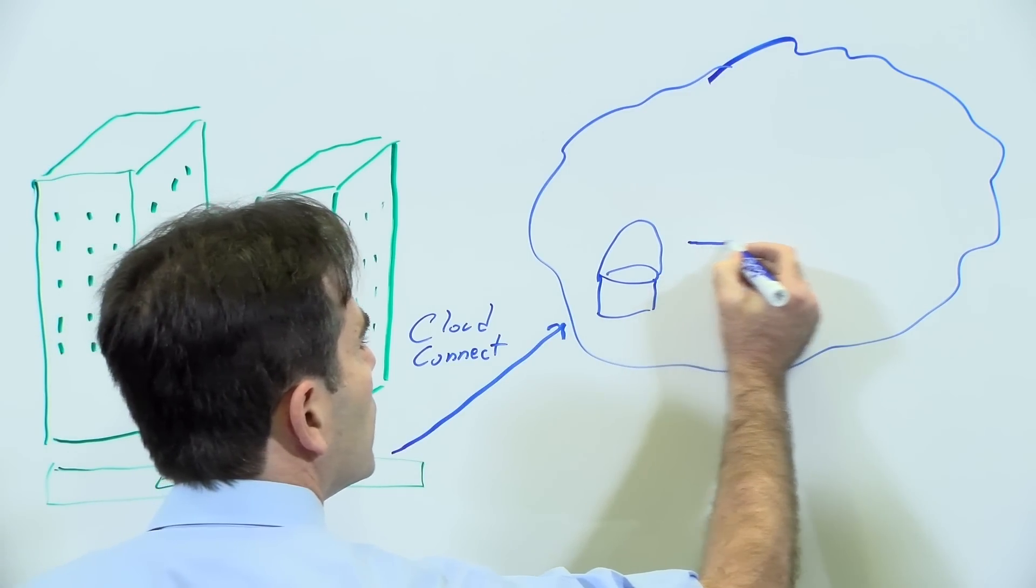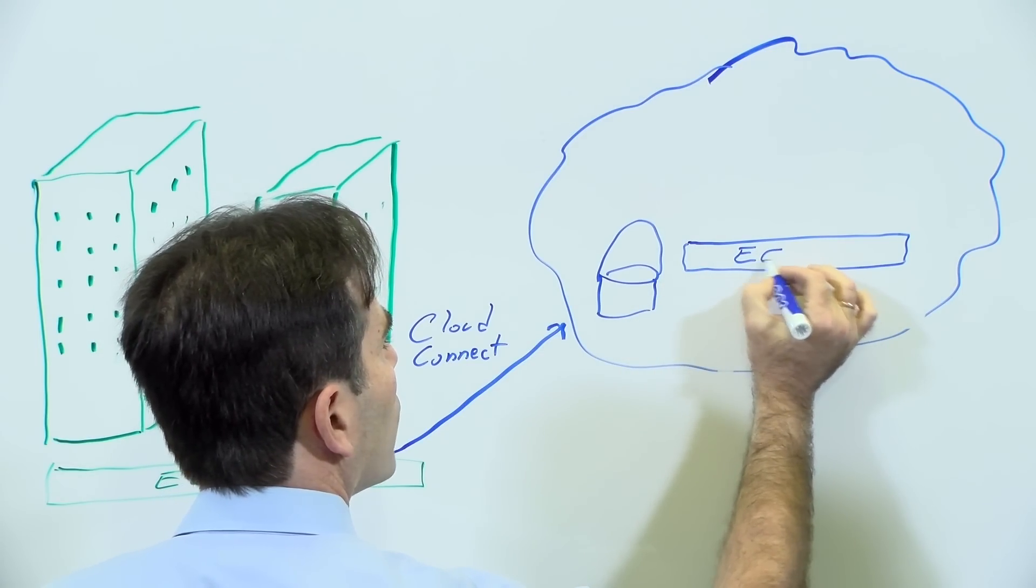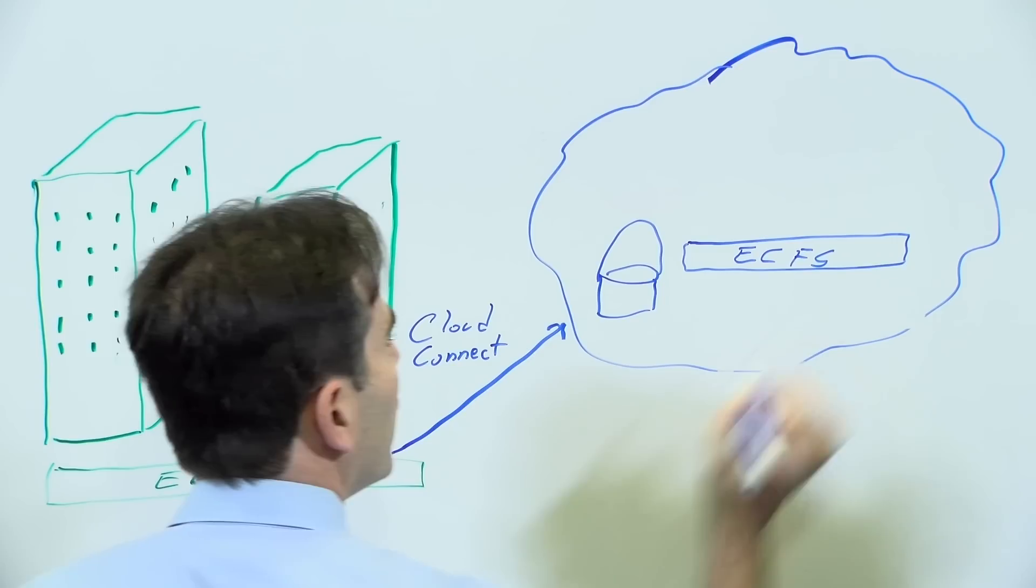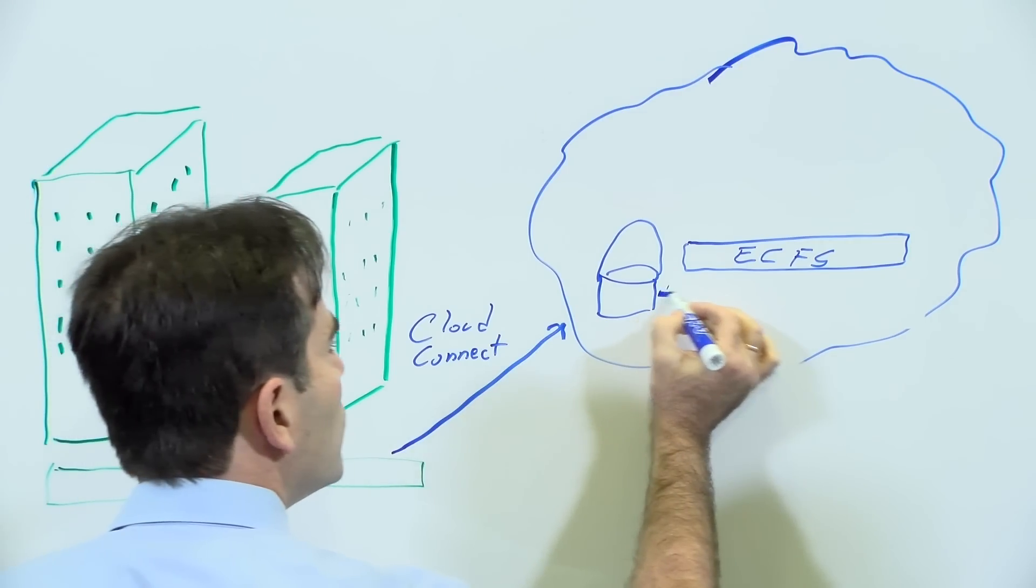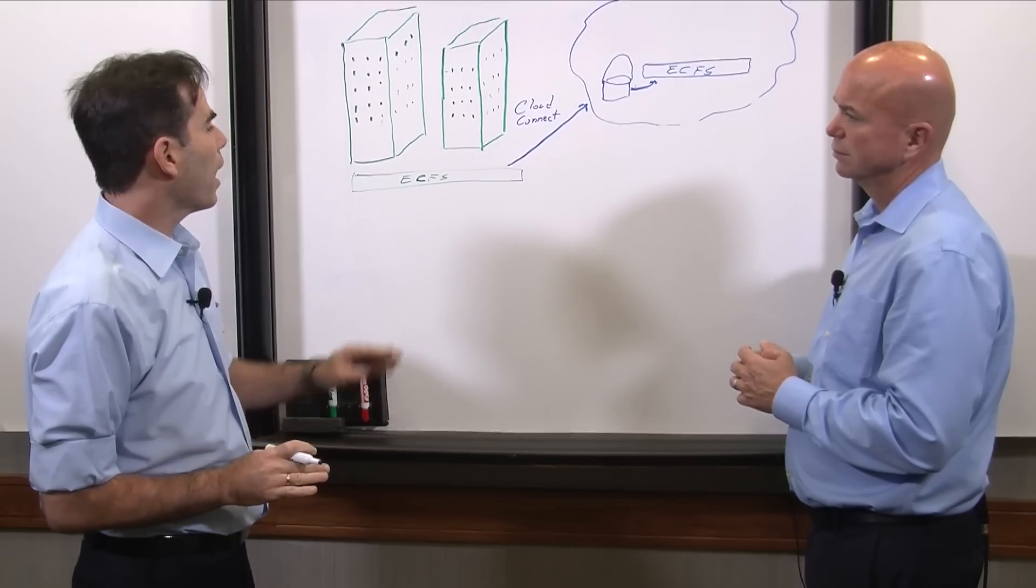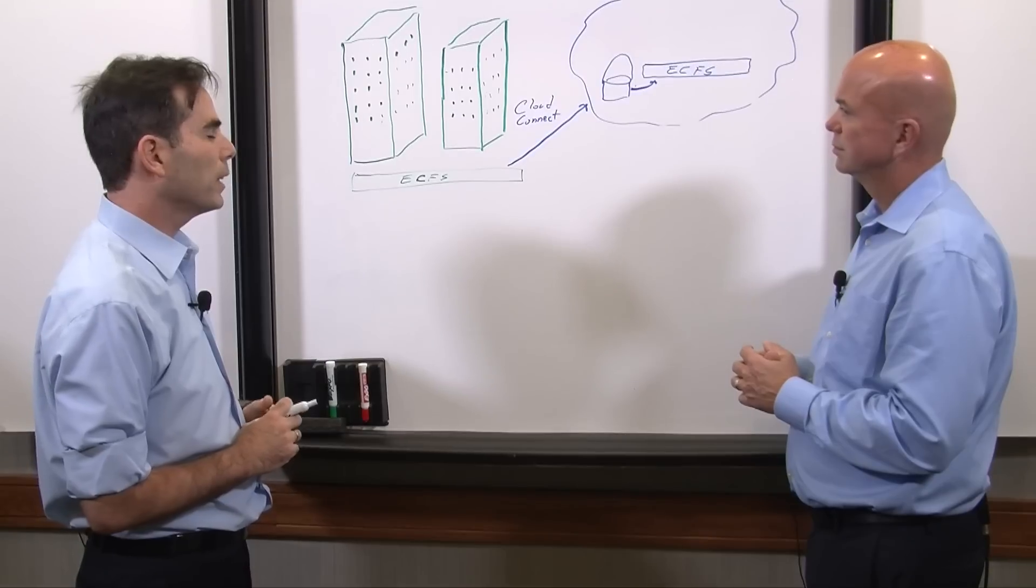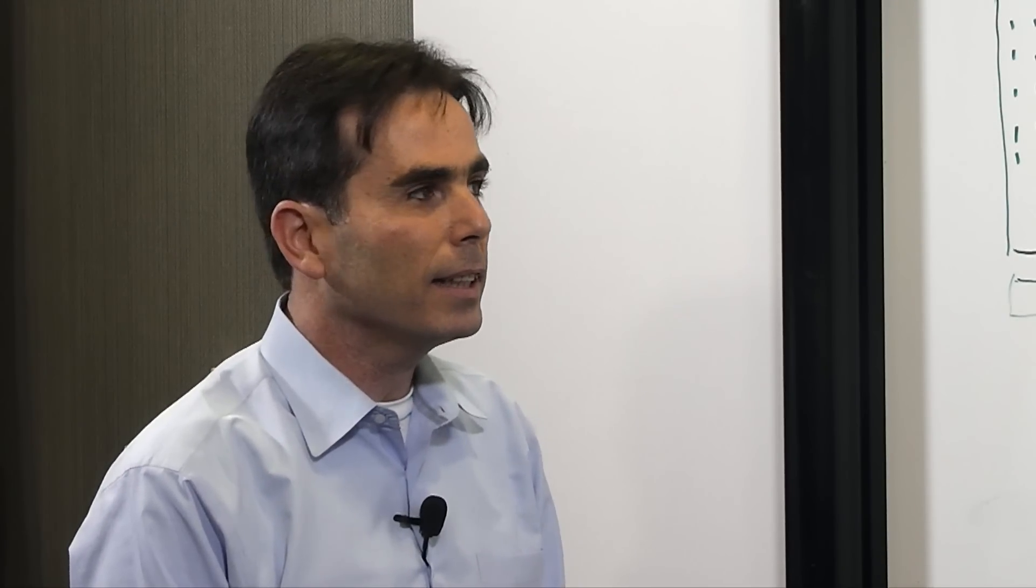So what we do is we allow them to check out this data into an Elastifile cloud file system running inside the cloud provider environment itself. And as you check out that data, you retain everything of the original file system that the original file system had. All of the hierarchies, all of the metadata, all of the access lists.